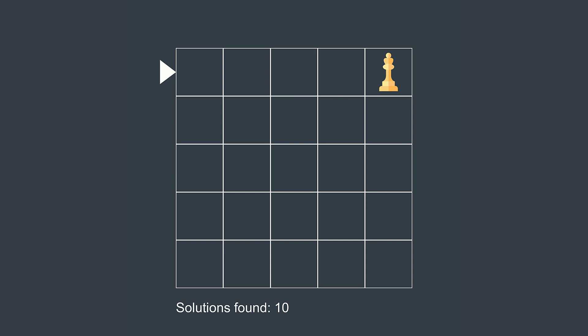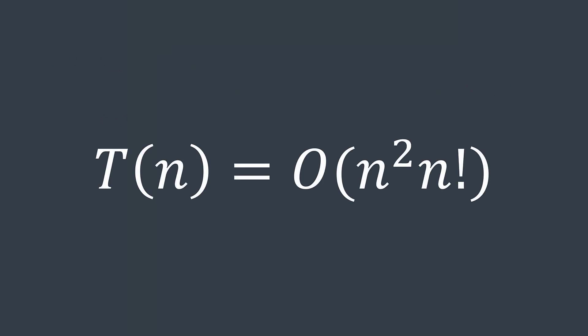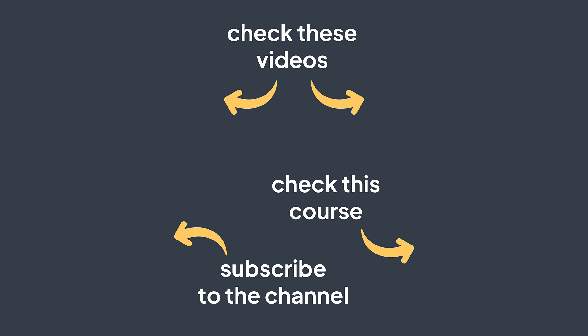This solution works quickly for n = 8, but for larger values of n it may not be fast enough. The time complexity is O(n² × n!), which is extremely slow. That brings us to the end of this video — if you learned something about backtracking, please like and subscribe, or check out one of my courses. See you in the next one.